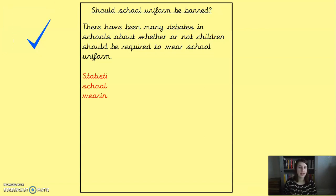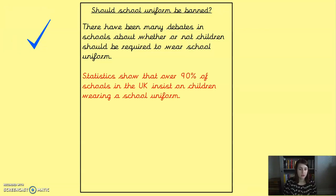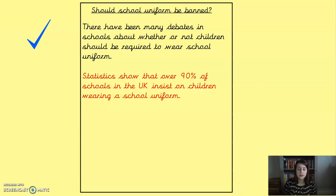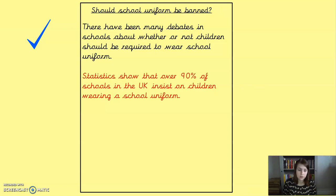Once you've got a paragraph that introduces the topic, the next paragraph — a whole new paragraph, so leave a line — is going to be a 'for' paragraph. In this paragraph, you are going to put a fully explained argument forward. You might make more than one point about why school uniform should be banned. Use your notes from yesterday to help you. Remember we've got another 'for' paragraph to write tomorrow, so spread your ideas between them — don't use all your ideas up in this one paragraph.